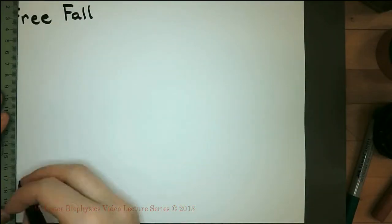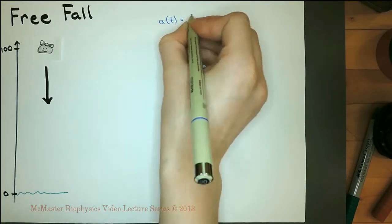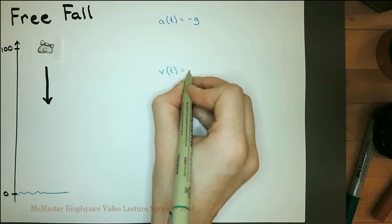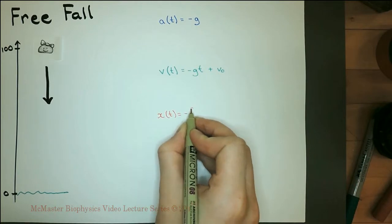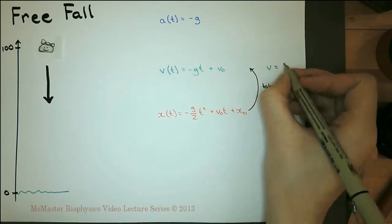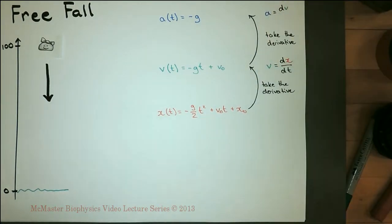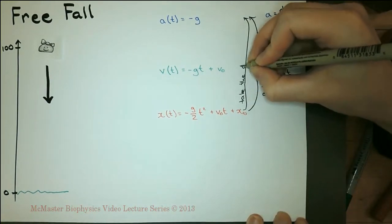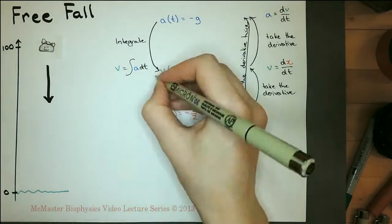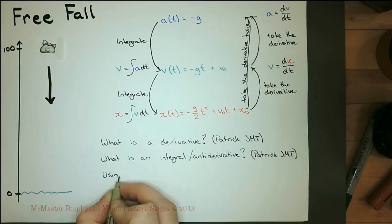Let's examine the functions that model the motion of an object in freefall with no air resistance. The acceleration will be negative 9.8, where 9.8 is g, the acceleration due to gravity. The negative sign is because downward is the direction chosen to be negative. The velocity and position functions follow, where t is the time in seconds, v0 is the initial velocity, and x0 is the initial position. To get the velocity function from the position function, take the derivative of position with respect to time. To go from velocity to acceleration, take the derivative of velocity with respect to time. Conversely, to go from acceleration to velocity, integrate; and to go from velocity to position, integrate again.